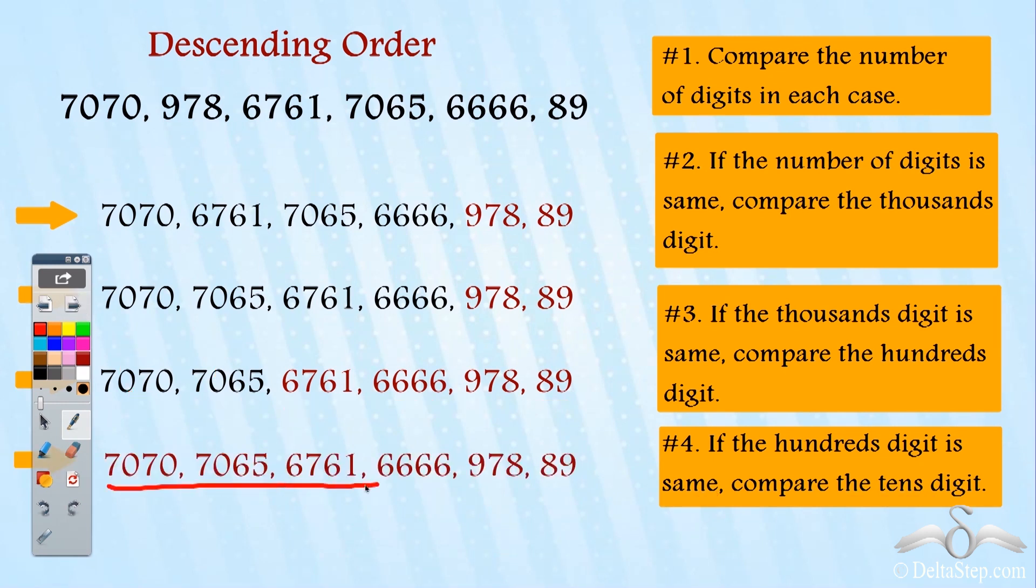This is in fact the correct order or sequence. These are the numbers arranged in descending order. This is how you can arrange any given set of numbers in descending order by following the rules one by one.